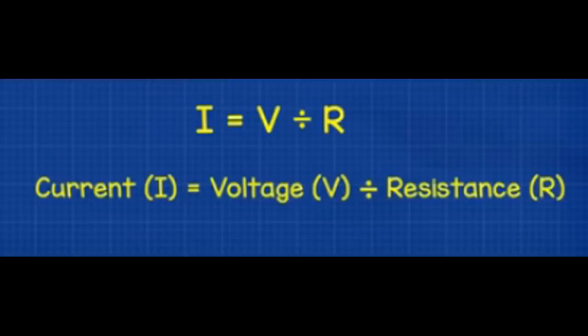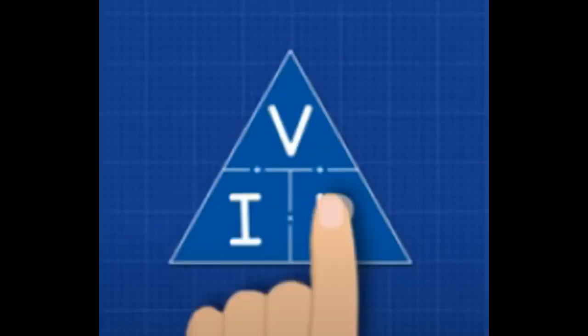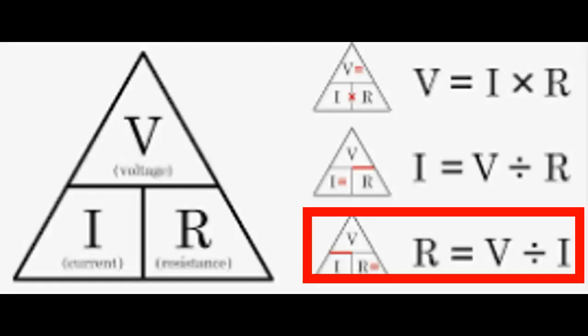If we want to find resistance, we write R and then cover up R in the triangle. That just leaves V and I, so we write V divided by I to get resistance equals voltage divided by current. Let's take a look at some visual examples of how to use these formulas.